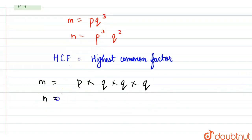And under that, if we write N - if we are expanding them, N is P raised to 3, so P into P into P into Q square which is Q into Q.